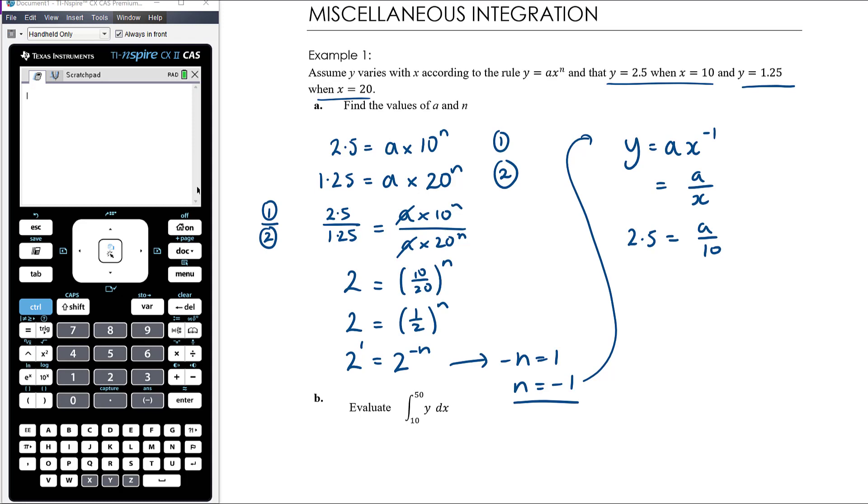Remember this is a on x. When y is 2.5, x is 10, and we can solve a just by multiplying by 10, so a is 25. Therefore the equation is 25 on x, or 25x to the negative 1. I might write it both ways; we can probably think of the anti-derivative better that way.